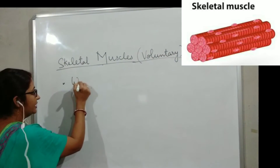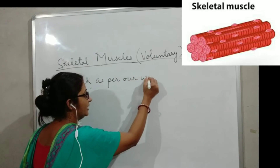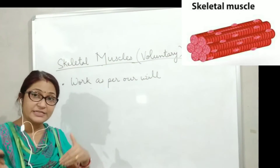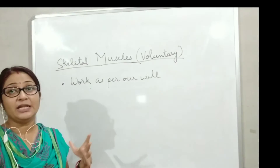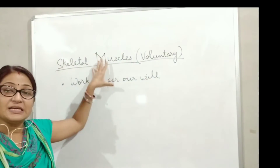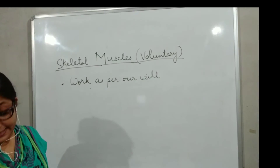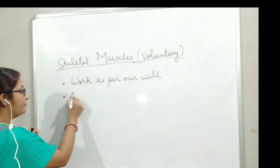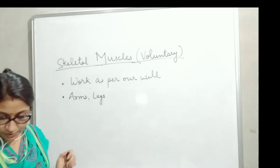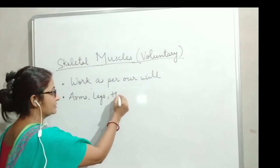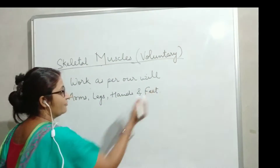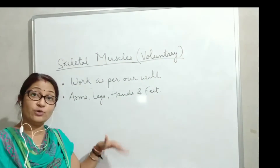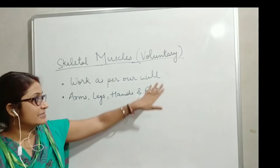These muscles work as per our will. If I want these muscles to work, they will work. If I don't want them to work, they will not work. That is called working as per our will, and that is the reason why they are called voluntary muscles. You can find them in arms, in legs, in your hands and feet. If I want my hand to move, then only it will move. So they move as per our will — and this is how they look.